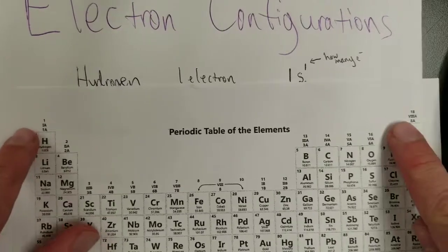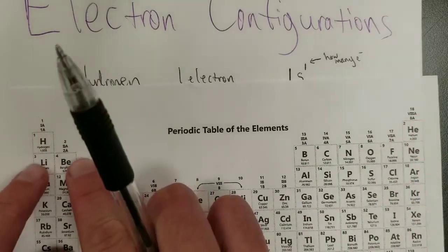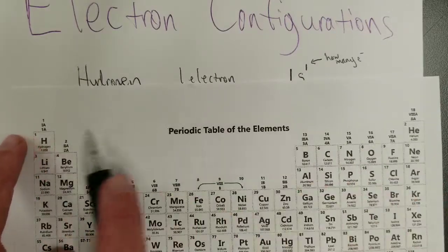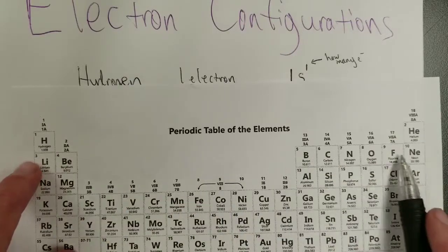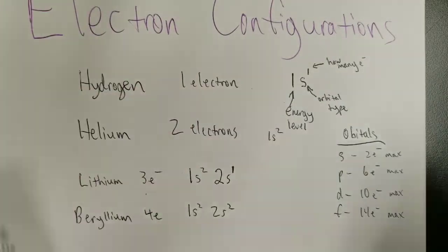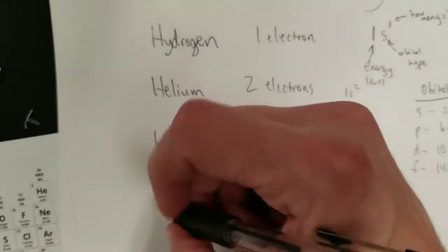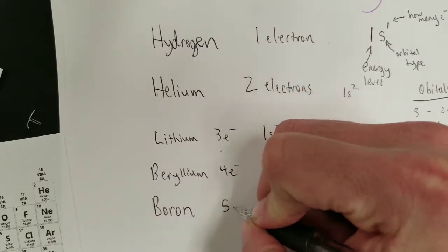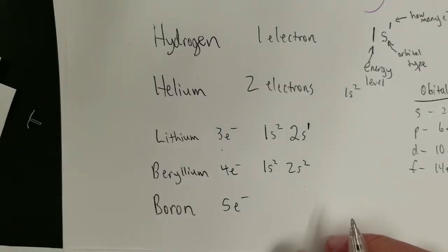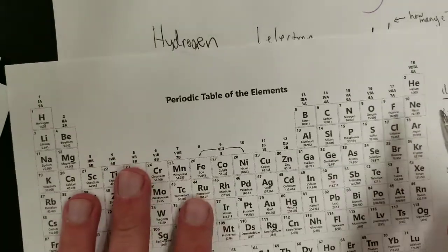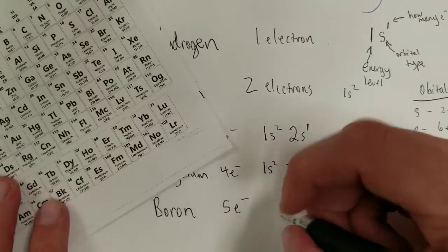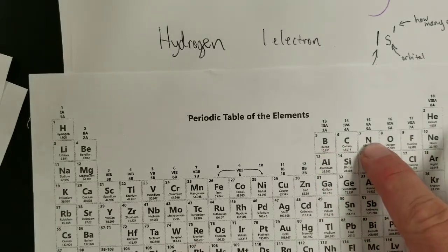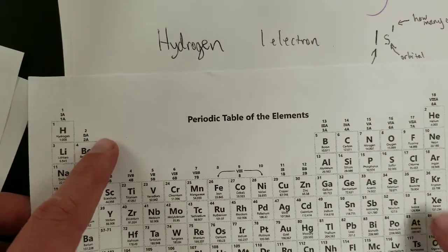So there's the 1s and the 2s orbital. Energy level 1 has just the S orbital. Energy level 2 has the S orbital and the P orbitals. What about boron? Boron has five electrons. Its configuration is 1s2, 2s2, 2p1. This region of the periodic table is the p-block — any element here will end its configuration in something involving 2p. Elements in the next row end in 3p, and so on.